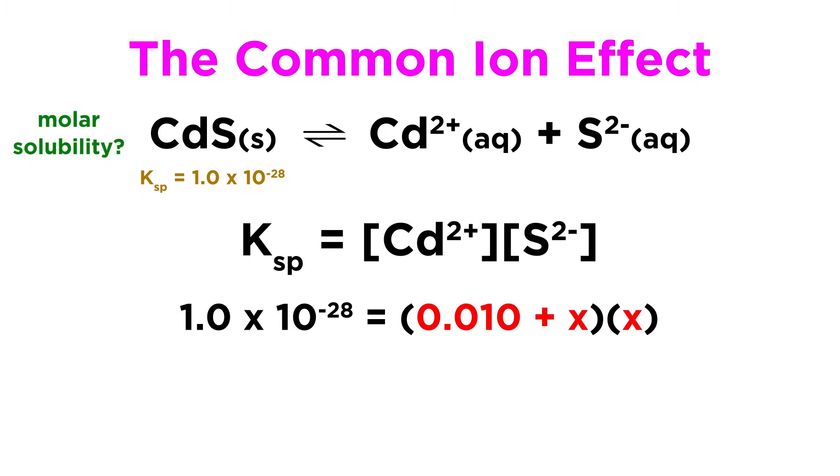We can then plug these terms into the Ksp expression, like so. Now, since the Ksp is so incredibly tiny when compared with the initial cadmium ion concentration, we can consider X, or the additional concentration of cadmium that will come from cadmium sulfide, to be negligible.